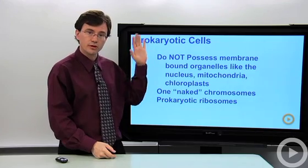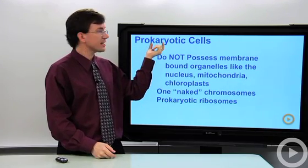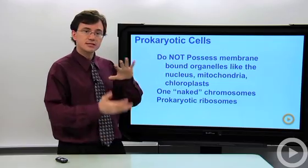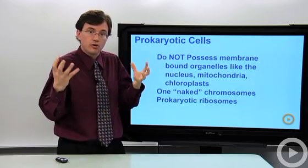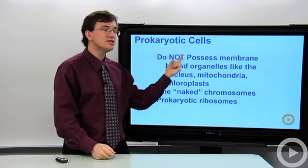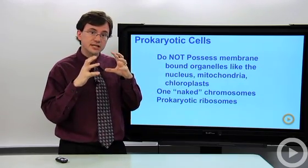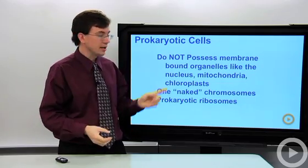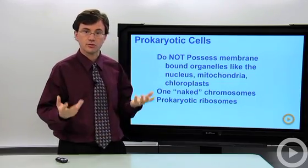Their name tells you one of their most important characteristics. 'Pro' means before, 'kary' means nucleus. So this tells you that these are cells that evolved before the nucleus came about. They do not possess internal organelles with double membranes around them, like the nucleus, the mitochondria, or the chloroplast.